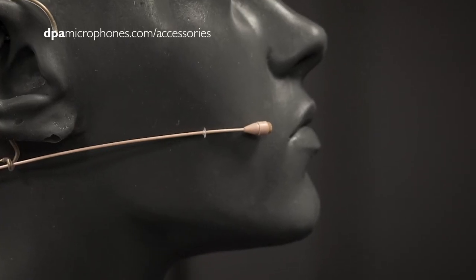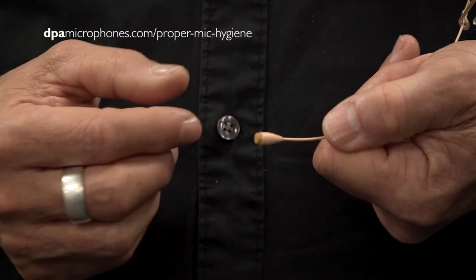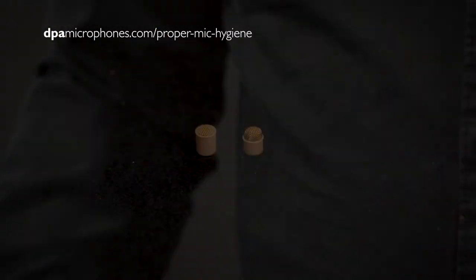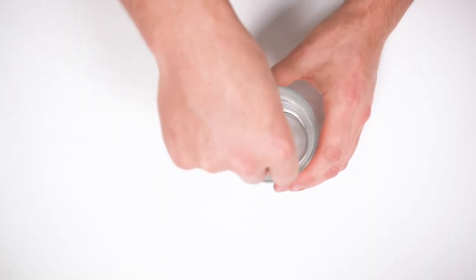The headset is pre-mounted with the soft boost grid. But if you need an extra little frequency boost, you can add the high boost cap instead. Both grids are exchangeable and are rinseable. Remove the grid and wash it separately before rinsing the microphone in demineralized water.